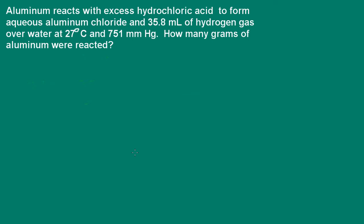Hi, this is Dr. O'Connor. Welcome to Pathways to Chemistry. Here we're told that aluminum reacts with excess hydrochloric acid to form aqueous aluminum chloride and hydrogen gas.